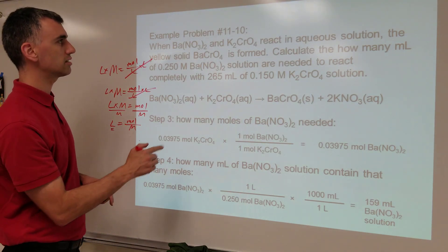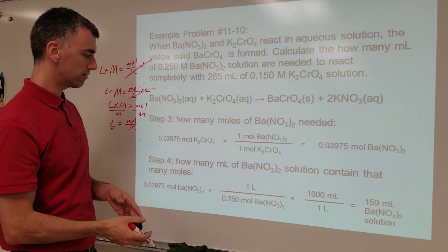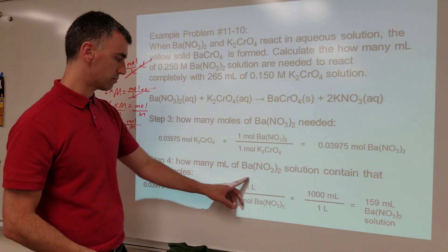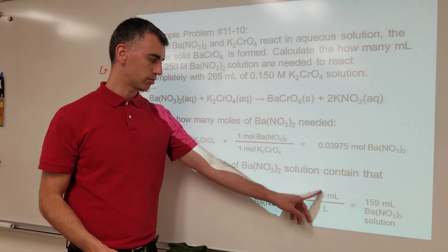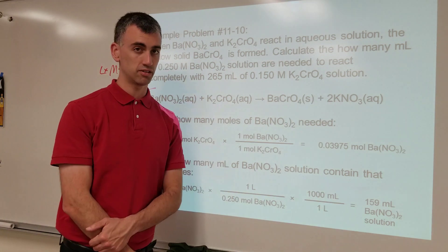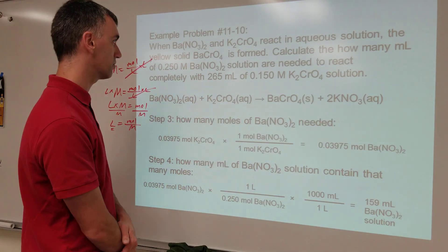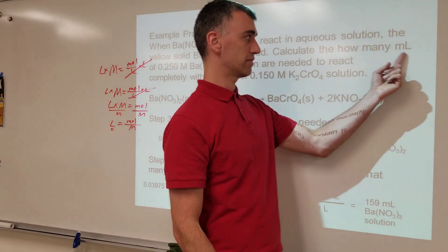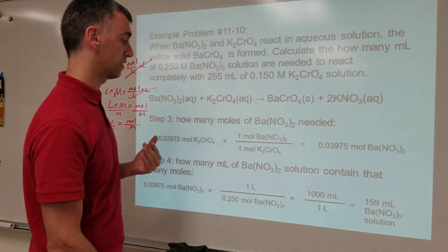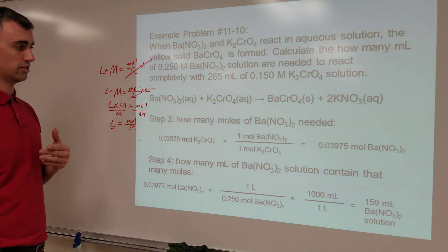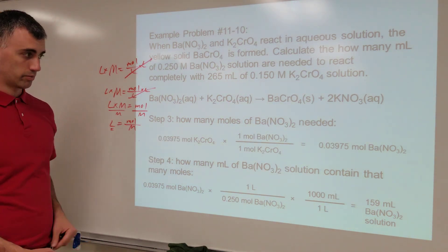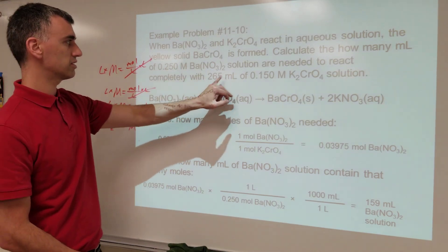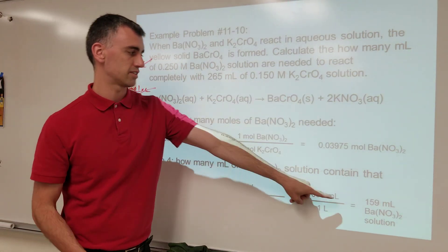The question asks for milliliters, so the final step is to take your liters and convert to milliliters. You've got to respond in the units you're asked for, and in this case it specifically tells you it wants milliliters for an answer. That would be boxed as your final answer: 159 milliliters. Three significant figures in, three sig figs, and three sig figs — three sig figs out.